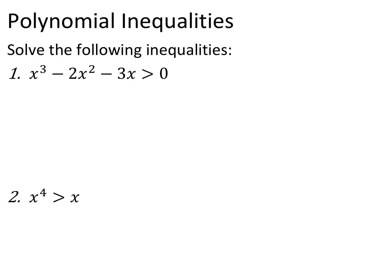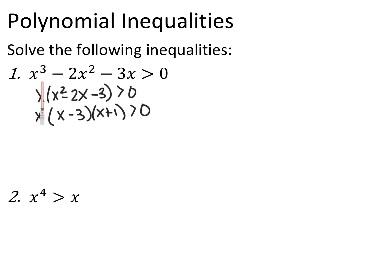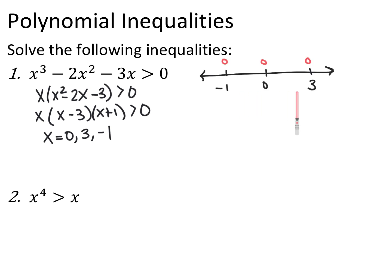For polynomial inequalities, we treat them exactly like quadratic inequalities. We always want one side to equal 0, and then we're going to factor completely. I factored out a GCF of x, and was left with x squared minus 2x minus 3, which factors into x minus 3 times x plus 1. So now that it's factored completely, the values that make the inequality equal to 0 are x equals 0, x equals 3, and x equals negative 1. We put those on a number line with open circles, because it was strictly greater than.